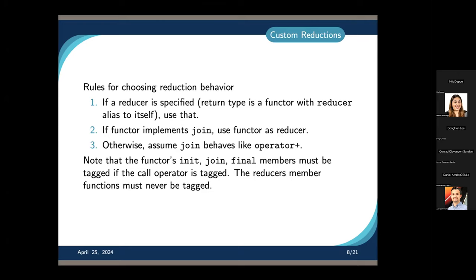As another technical detail: if you are using tagged reductions — if you give your policy a tag and decide on that what the call operator should be — then join and final also need to be tagged if the functor is a reducer. But if we have a separate reducer object, then we must never have a tag on join and final.